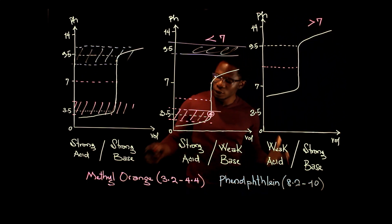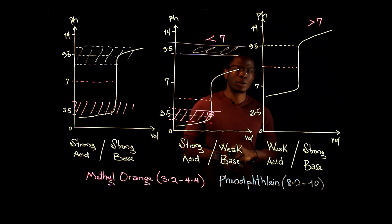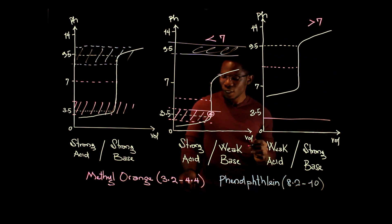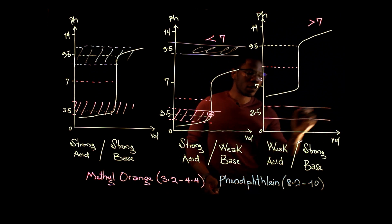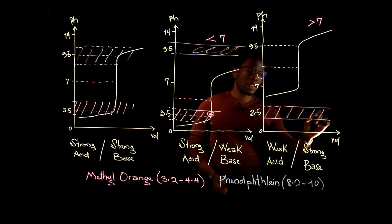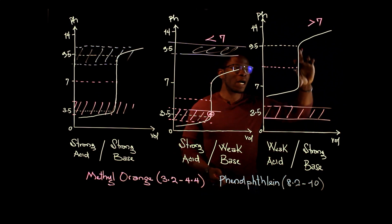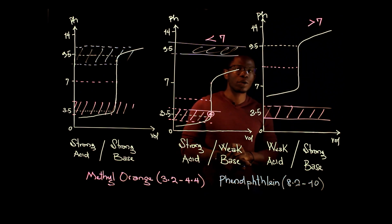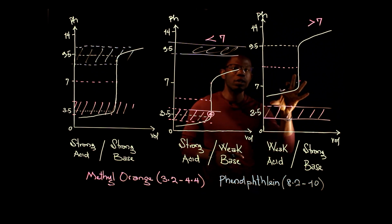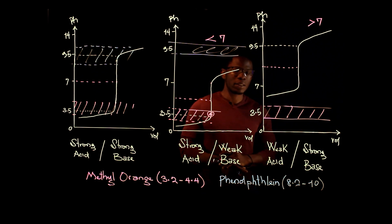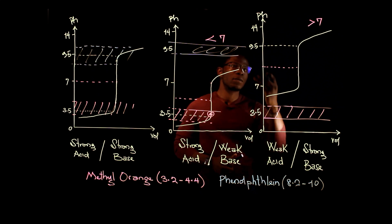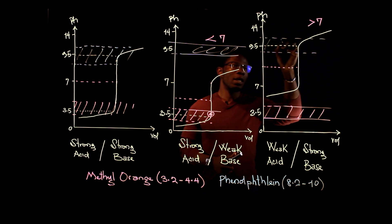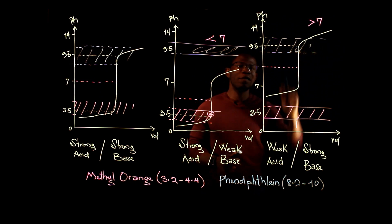Let's choose the best indicator for this reaction. Looking at methyl orange — 3.2 is somewhere around here and 4.4 somewhere around here — this range falls outside the vertical line that indicates the end of the titration, so methyl orange would not work here. But phenolphthalein, effective between 8.2 and 10, works perfectly in this case.